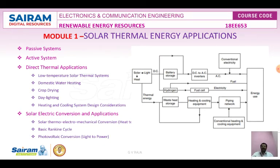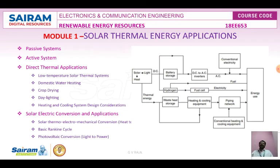Active systems are the most common and use pumps to circulate water or another heat-absorbing fluid through solar collectors. These collectors are commonly made of copper tubes bonded to a metal plate painted black, encapsulated in an insulation box, and covered by a glass panel. They are also used for pool heating and other applications.